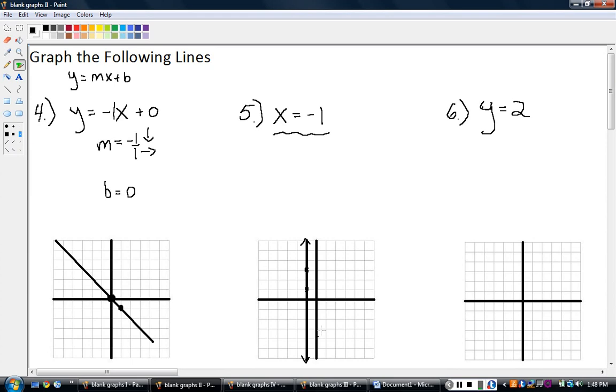So look at the next one now. Y equals two. You might remember this has a slope of zero and is a horizontal line from the last chapter. So a horizontal line at Y equals two.